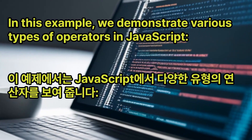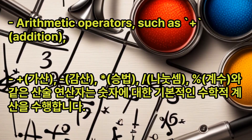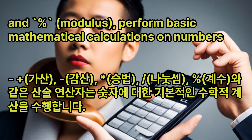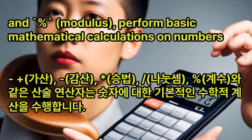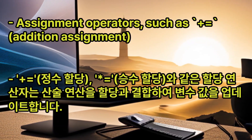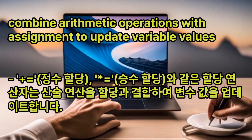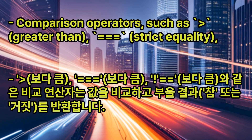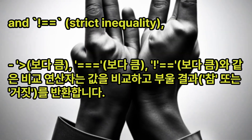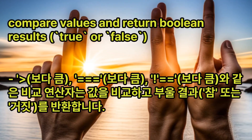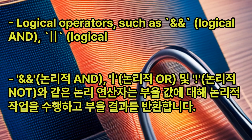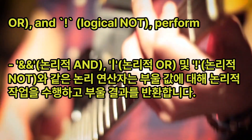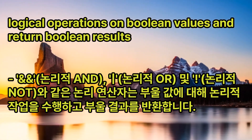In this example, we demonstrate various types of operators in JavaScript. Arithmetic operators such as addition, subtraction, multiplication, division, and modulus perform basic mathematical calculations. Assignment operators such as addition assignment and multiplication assignment combine arithmetic operations with assignment to update variable values. Comparison operators such as greater than, strict equality, and strict inequality compare values and return boolean results. Logical operators such as logical AND, logical OR, and logical NOT perform logical operations on boolean values and return boolean results.